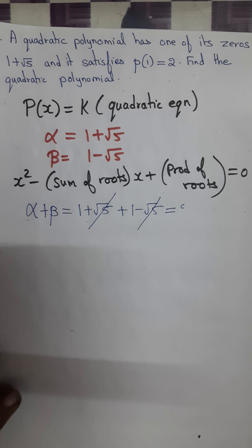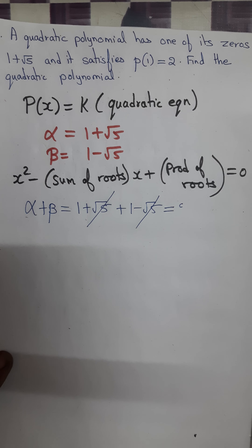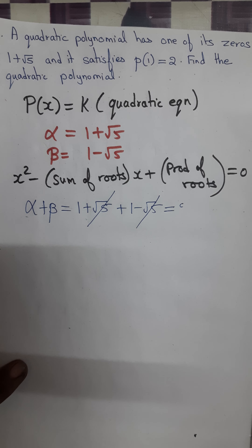Exercise 2.4, second question. A quadratic polynomial has one of its zeros as 1 plus root 5, and it satisfies p(1) equal to 2. Find the quadratic polynomial.